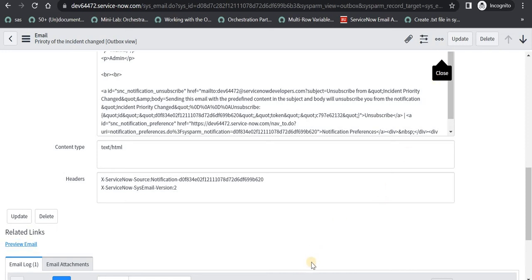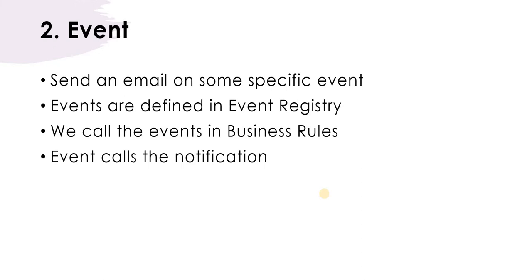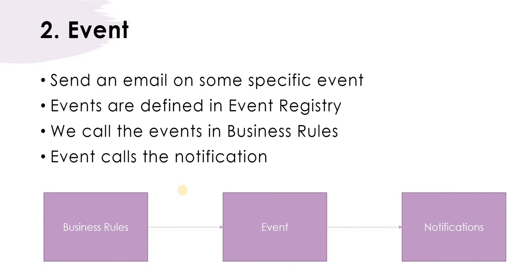The second way to send an email is through events. We will send an email on some specific event — for example, if the assigned-to is updated, the priority is changed, or if something is happening in a change ticket and there are related incidents and we want to send an email to assigned-to or the callers. This is for scenarios which are slightly more complicated. We have to define these events in the event registry, call these events in business rules, and then the event will call the notification we create.